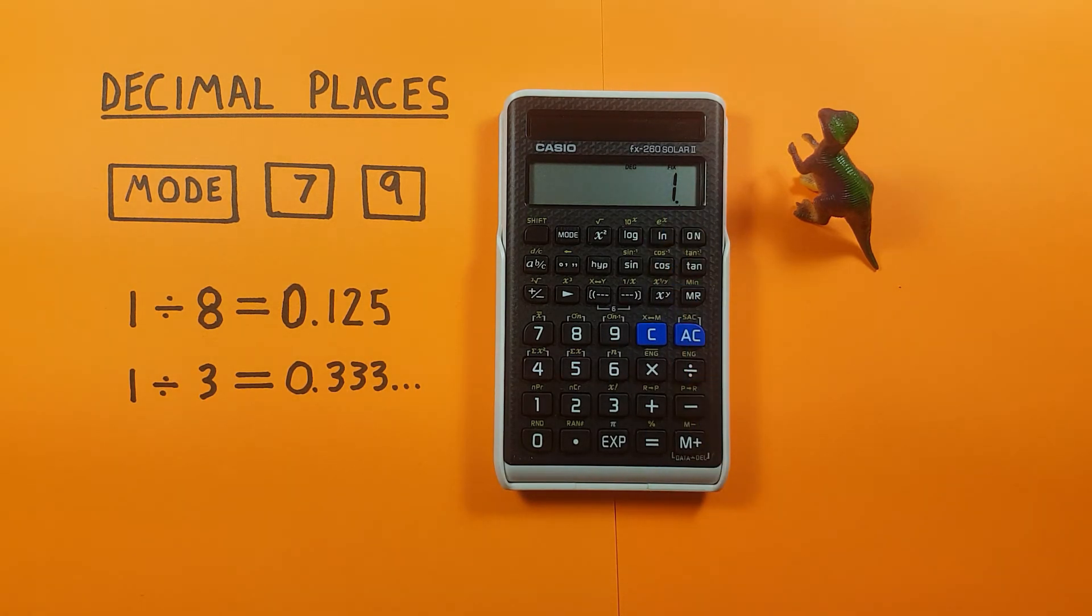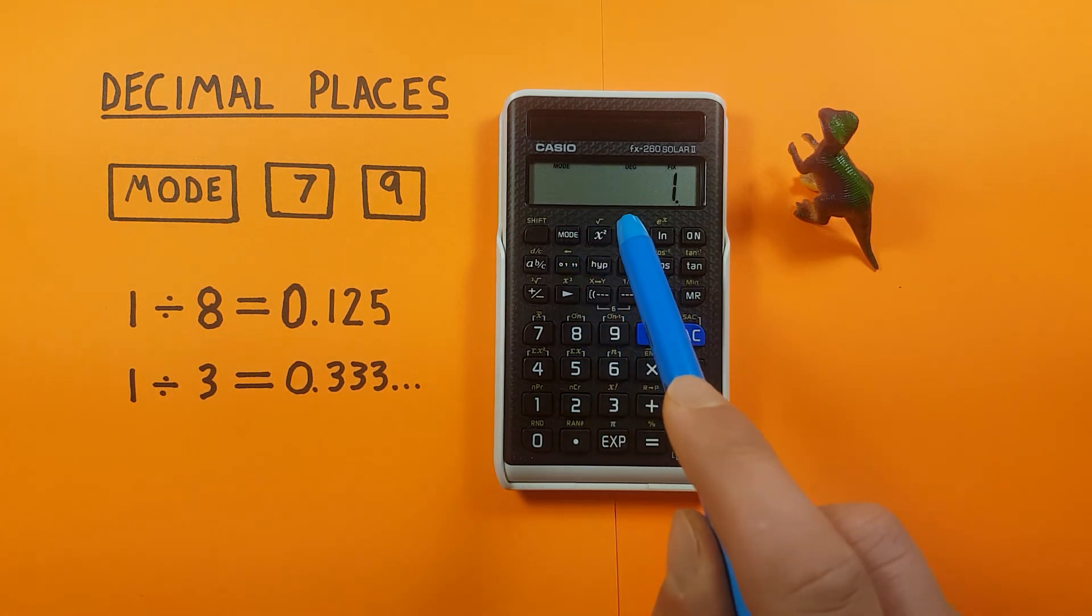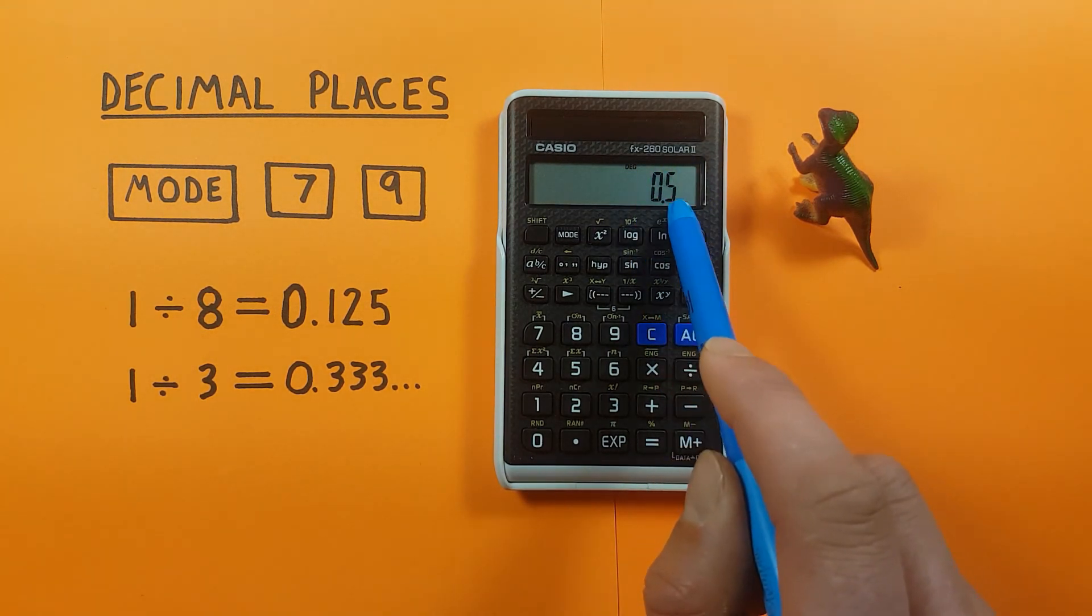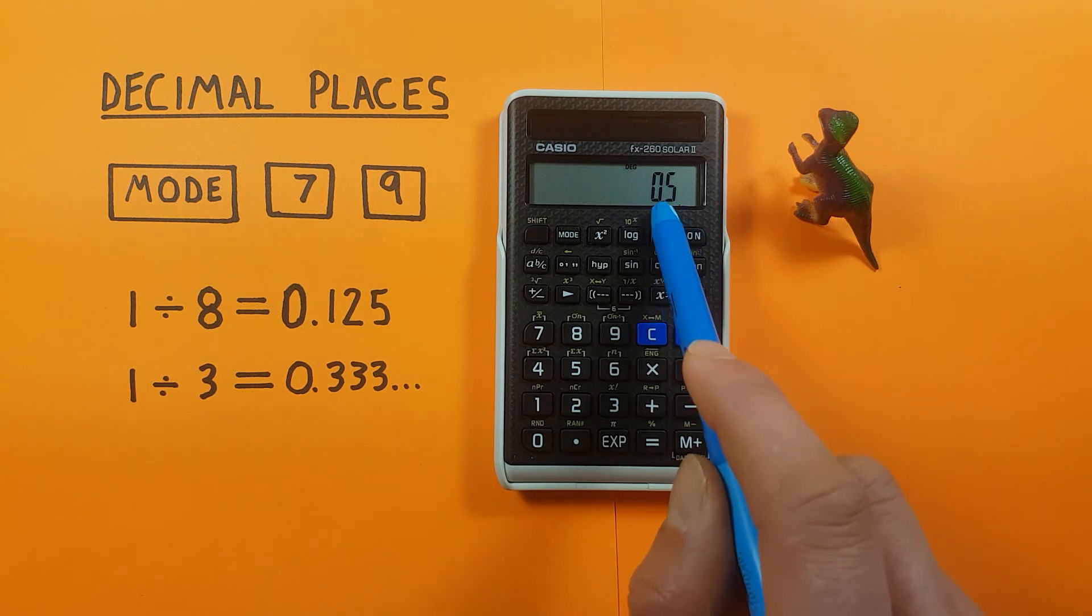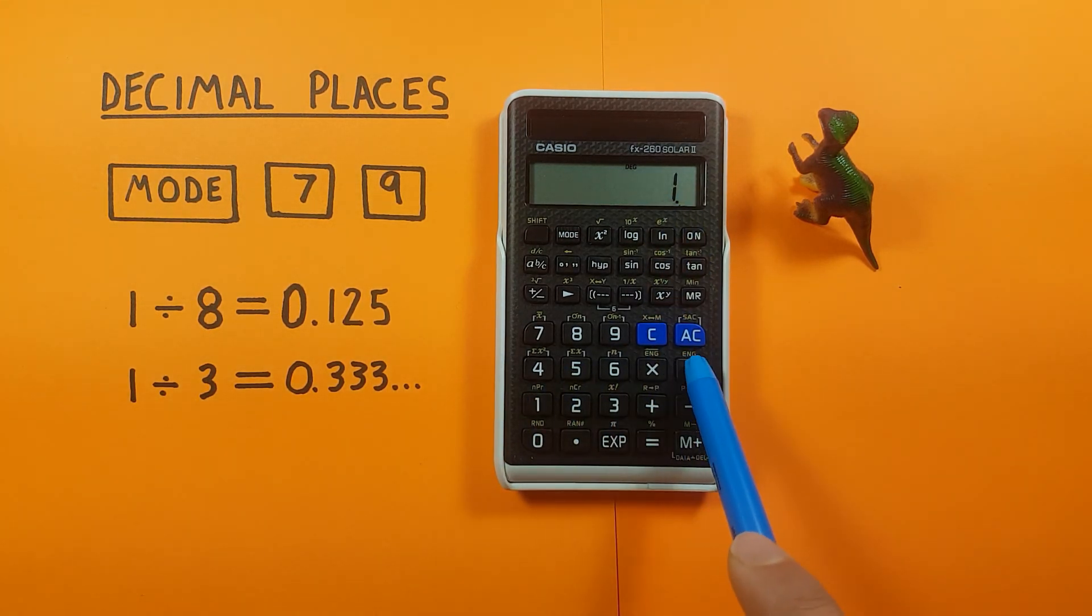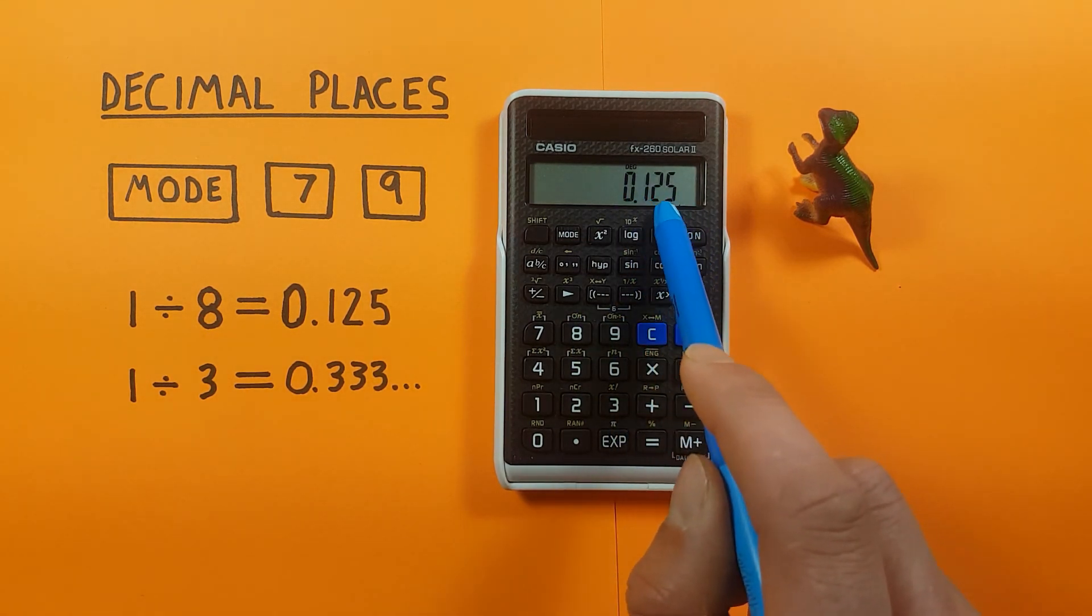When we're done with this mode we can turn it off and return to normal mode by pressing the mode key and then 9. You can see the word fix has disappeared and we're getting the correct number of decimals again. We're back to one decimal place for that because it's just 0.5 and if we go 1 divided by 8 we're getting the 3 needed to display it there.